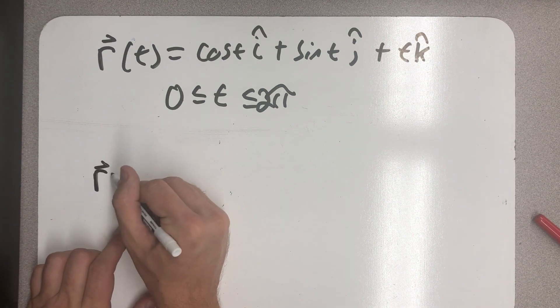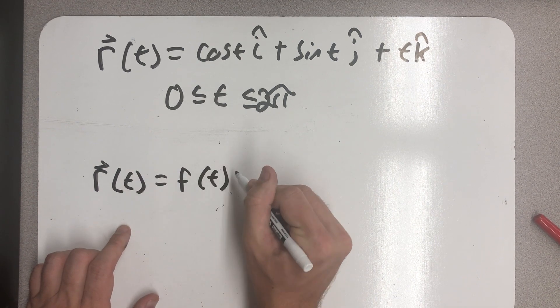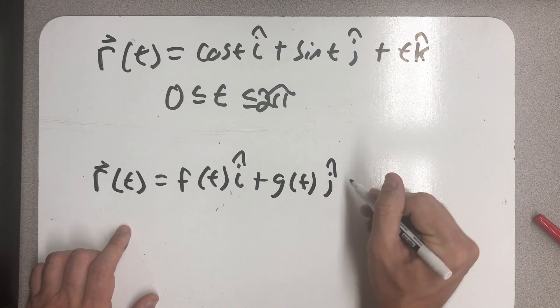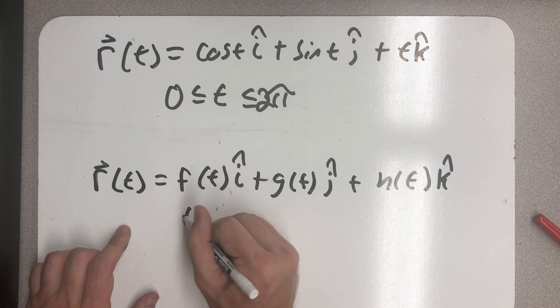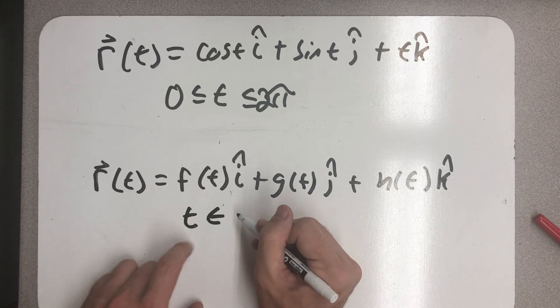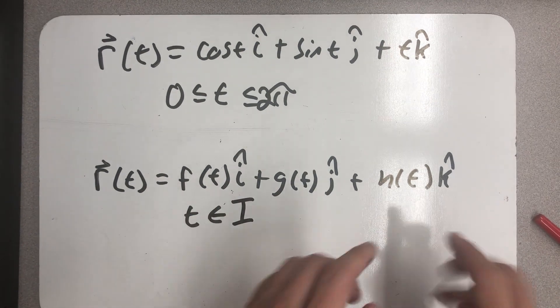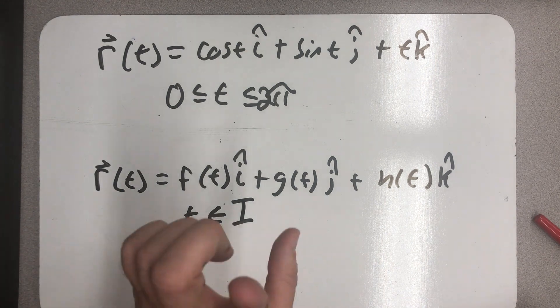Okay. So functions like this, r(t), which have components f(t), g(t), and h(t), where t is on some parameter interval, so t is in some interval. Right? My component functions are parametric equations that generate a curve. This vector points at points on that curve.